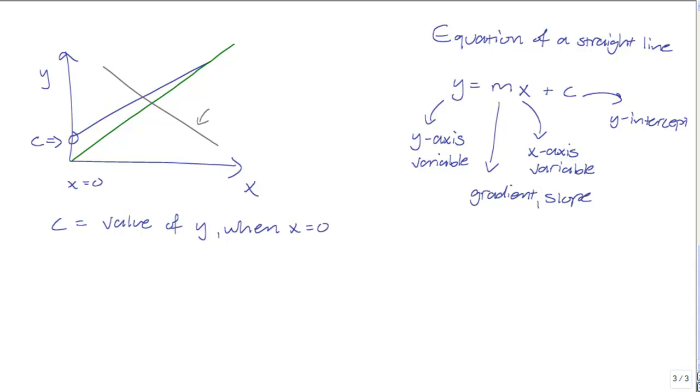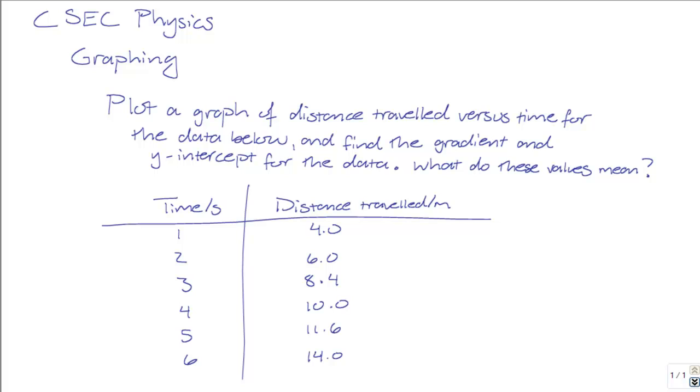So two pieces of information you can get from a graph are the gradient and the y-intercept, which is given the symbol C. So let's move on to plotting an actual graph. We're given some information here that asks us to plot a graph of distance traveled versus time for the data below, and find the gradient and y-intercept for the data. We're also asked what these values mean.